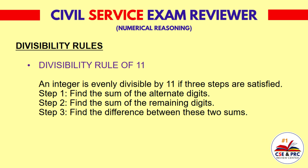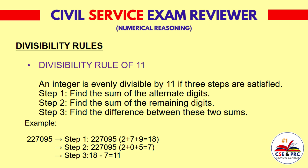Divisibility Rule of 11: An integer is evenly divisible by 11 if three steps are satisfied. Step 1: Find the sum of the alternate digits. Step 2: Find the sum of the remaining digits. Step 3: Find the difference between these two sums. For example, 227,095. Step 1: 2+7+9 equals 18. Step 2: 2+0+5 equals 7. Step 3: 18 minus 7 equals 11. The difference is a multiple of 11.